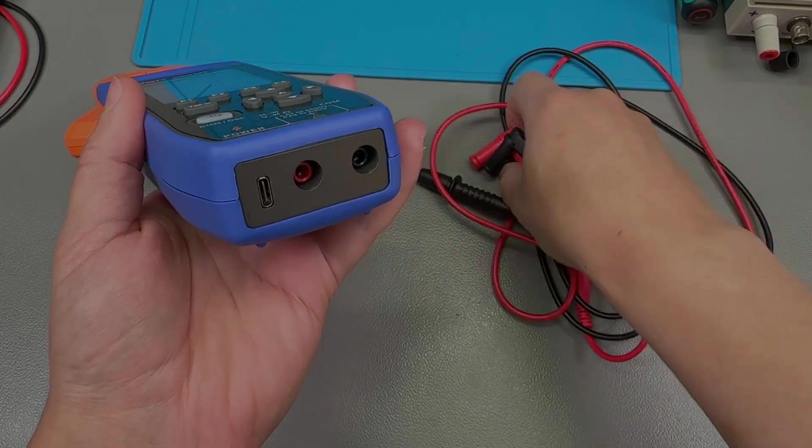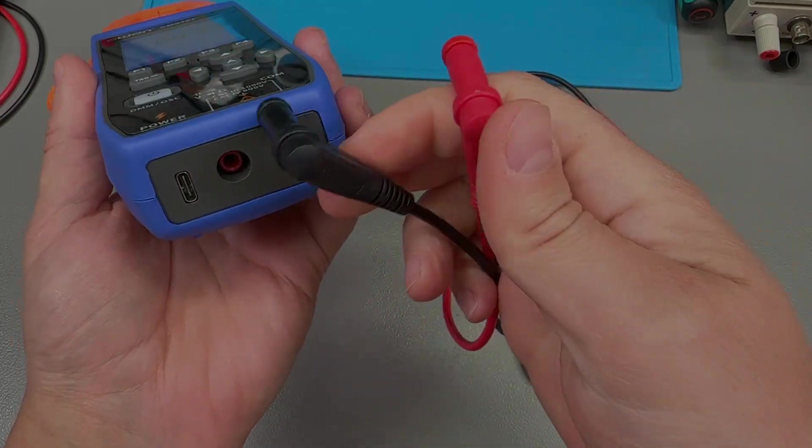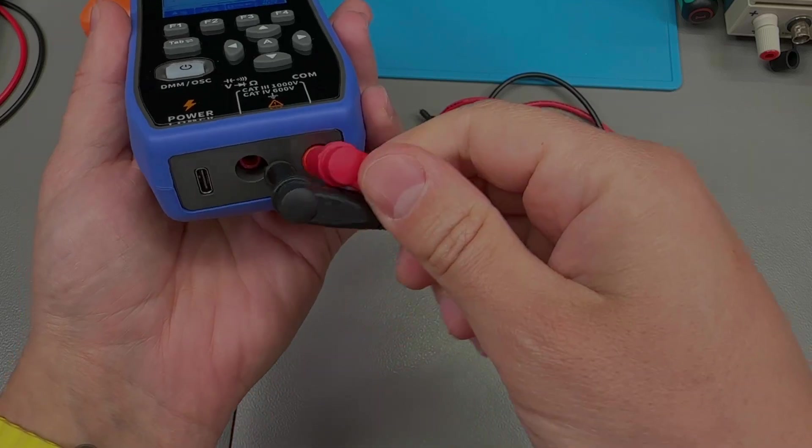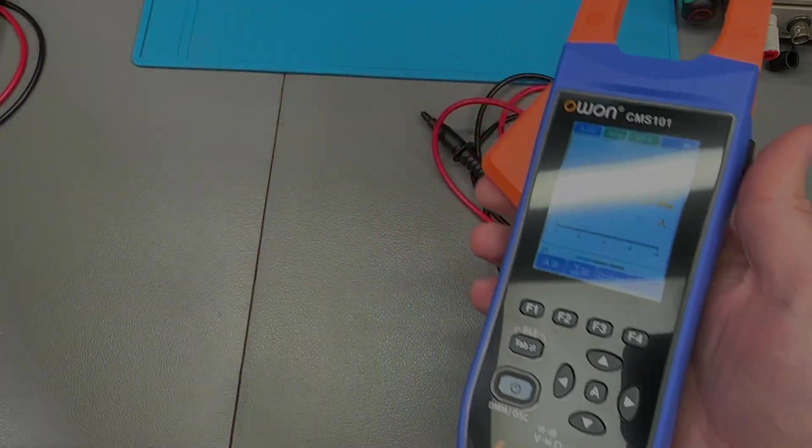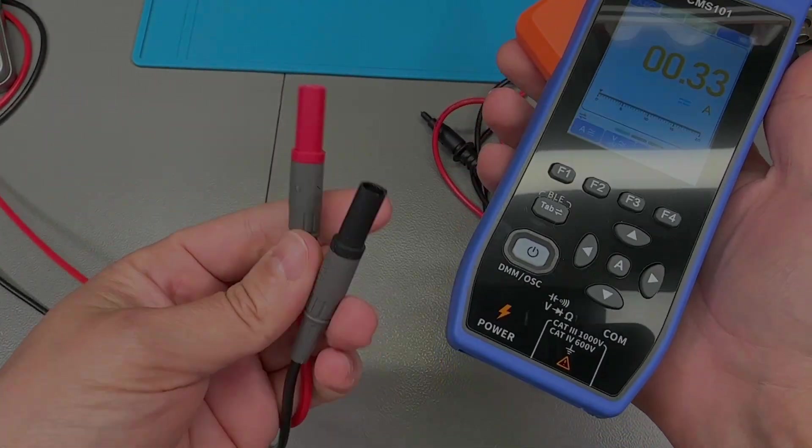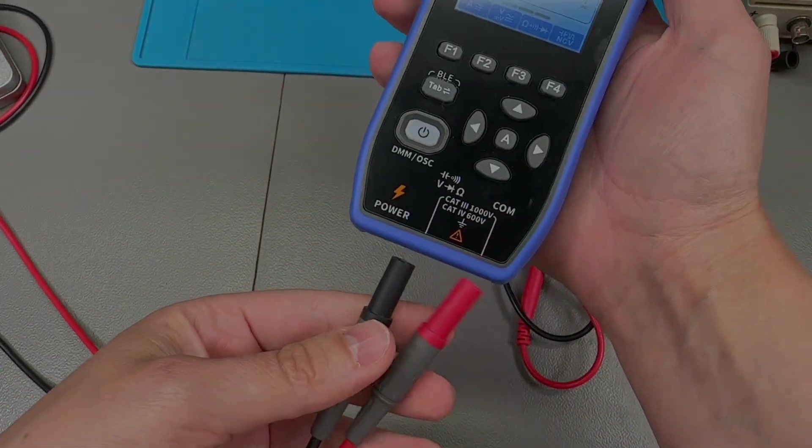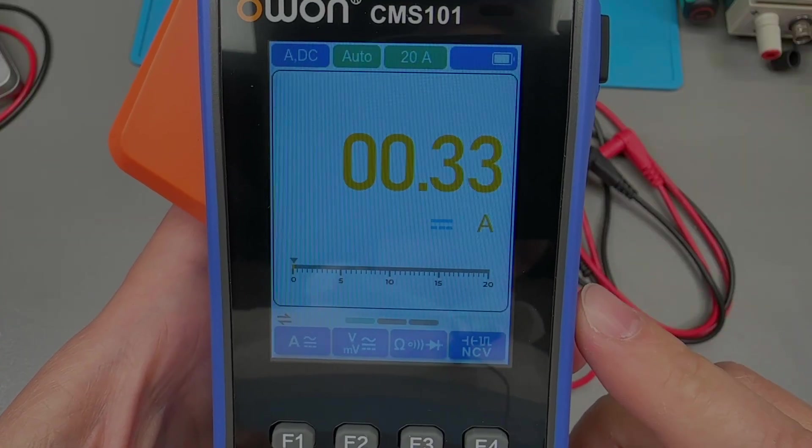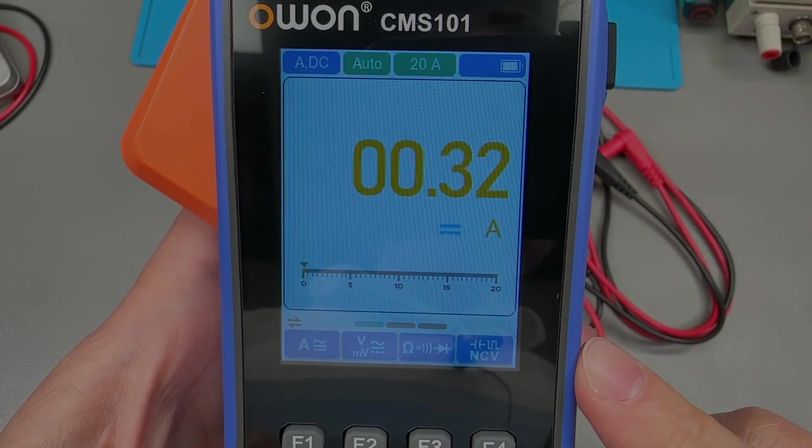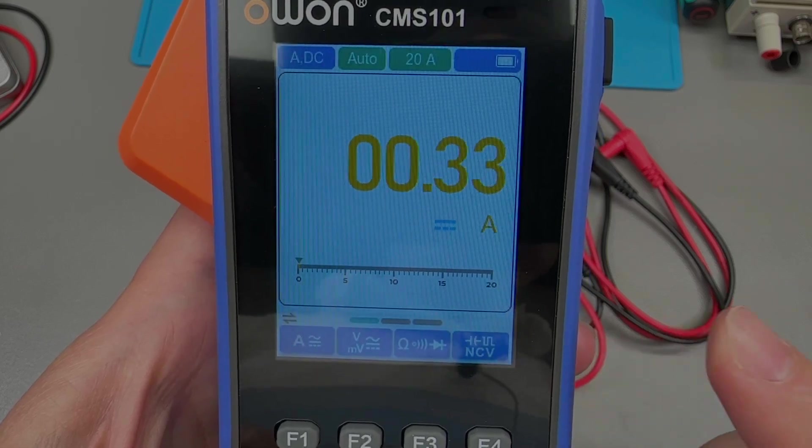Like mentioned earlier, the provided test leads have a 90 degree banana connector, so I don't feel like that's optimal for this form factor. I would very much prefer if they would supply straight leads. I feel like these would connect much nicer. Using the wire test leads, the multimeter can measure AC and DC up to 1000 volts,